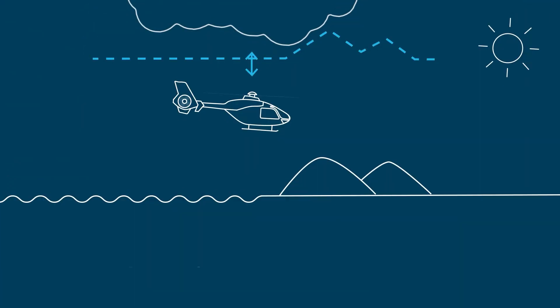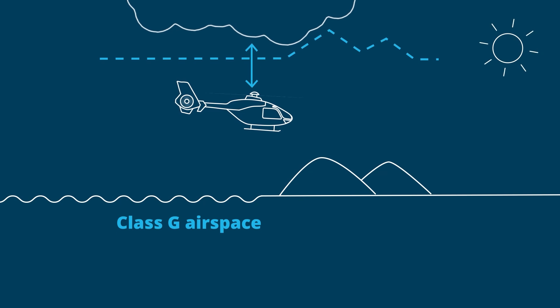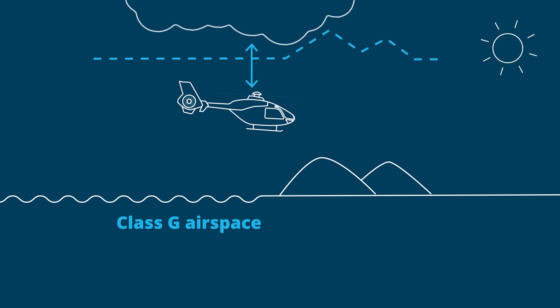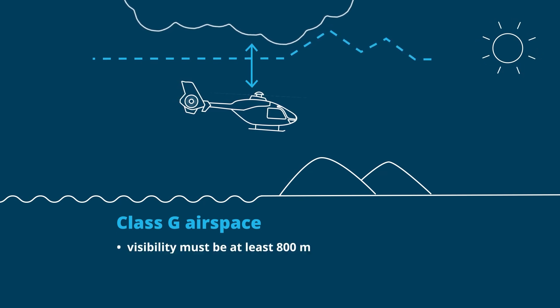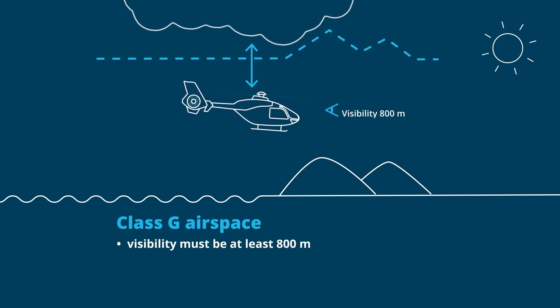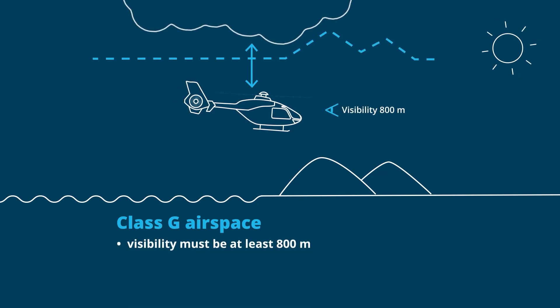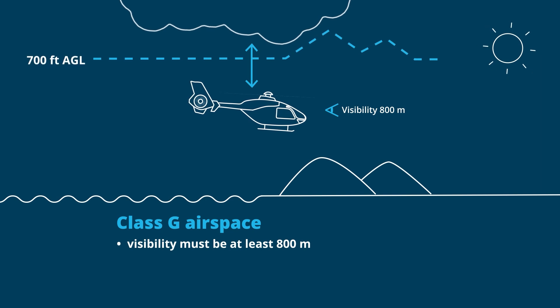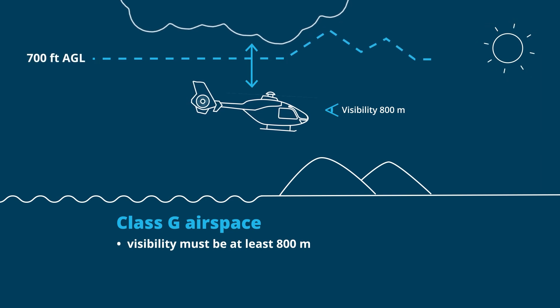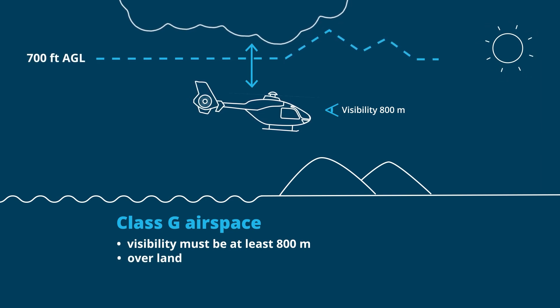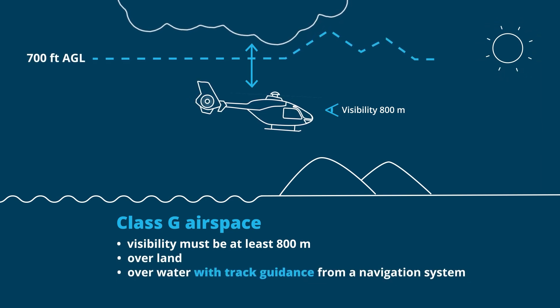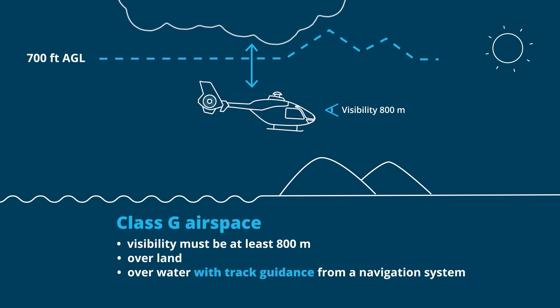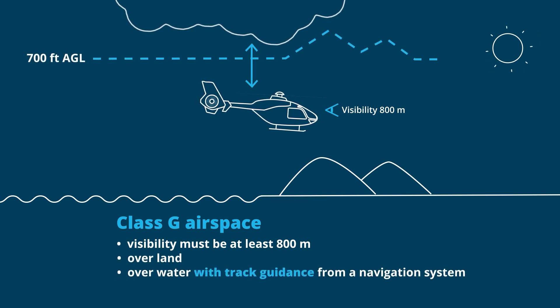In daylight hours, you must be clear of cloud with a visibility of at least 800 meters when flying below 700 feet over land, or over water with a navigation system providing guidance.